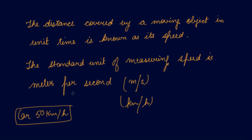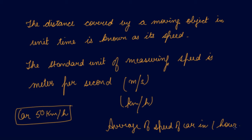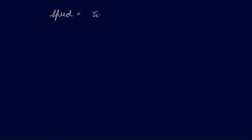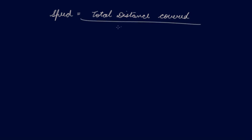Now the speed of a car cannot be constant. Sometimes the driver has to use the brake so the speed slows down, and sometimes the speed increases. So the speed of the car does not remain uniform. When we calculate the speed of the car, we are talking about the average speed in one hour. We consider the total distance covered in one hour and do not worry whether the car moved at constant speed or not. Speed is equal to total distance covered divided by total time taken.